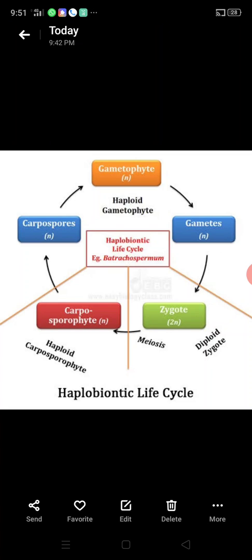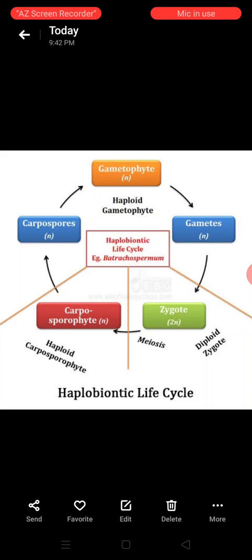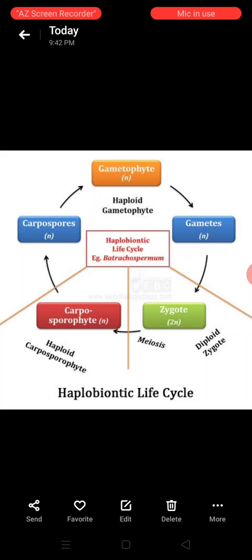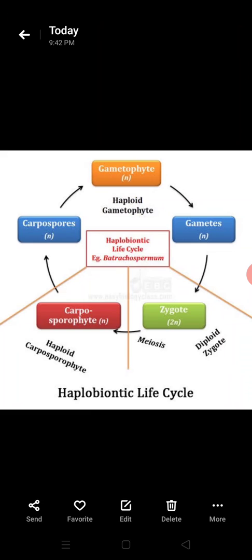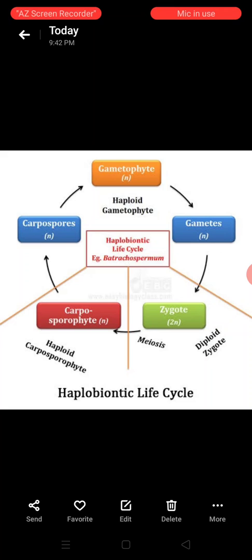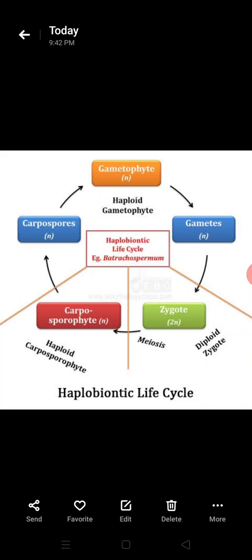The gametophyte produces haploid gametes through mitosis — gametogenic mitosis — because it is already haploid. These gametes fuse in pairs and form the zygotes. The zygote is now in the diploid condition, as you can see in this flowchart, and the zygote is the only diploid phase in the life cycle.